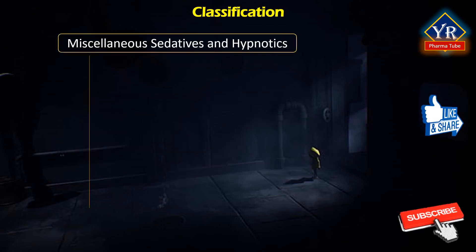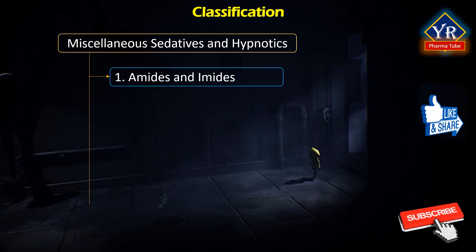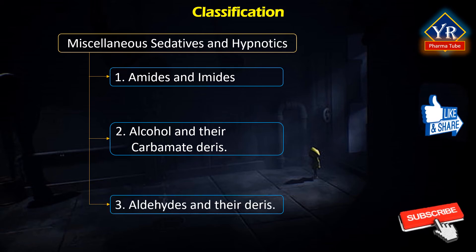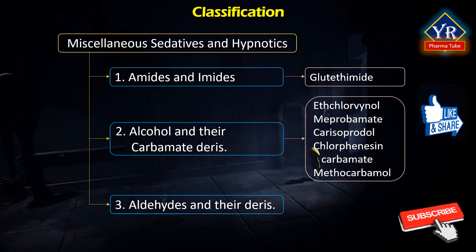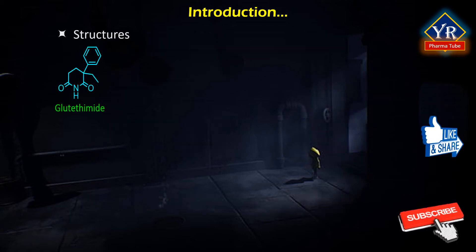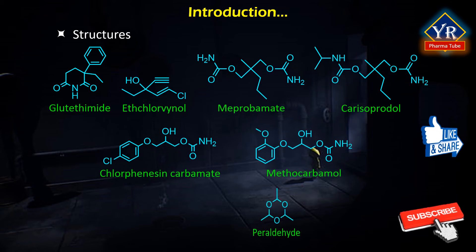Thus, miscellaneous agents of sedatives and hypnotics are broadly classified into three categories: 1. Amides and imides; 2. Alcohols and their carbamate derivatives; 3. Aldehydes and their derivatives. Glutethimide is an example of the amides and imides class. Ethchlorvynol, Meprobamate, Carisoprodol, Chlorphenesin carbamate, and Methocarbamol are examples of alcohols and their carbamate derivatives. Aldehydes and their derivatives include chloral hydrate and paraldehyde. Here are the structures of various classes of miscellaneous agents of sedatives and hypnotics.